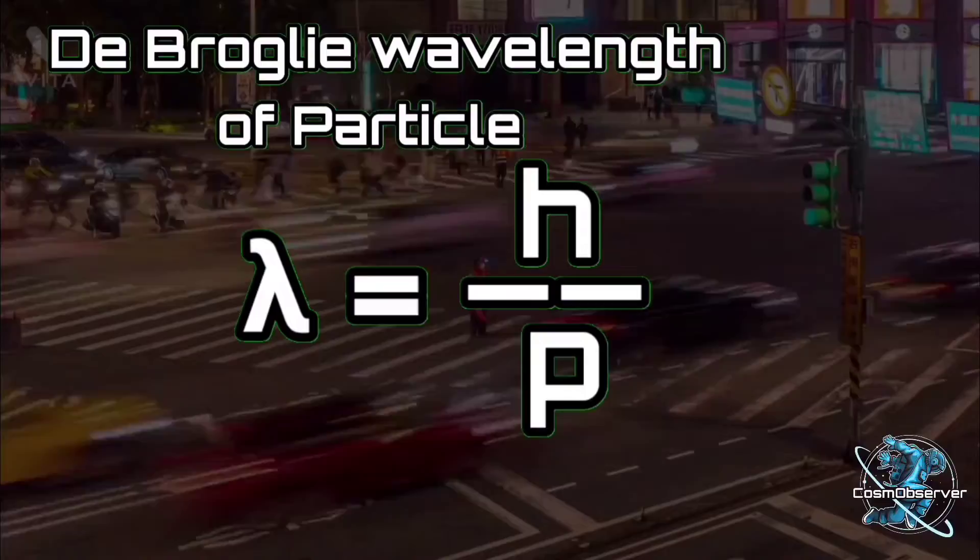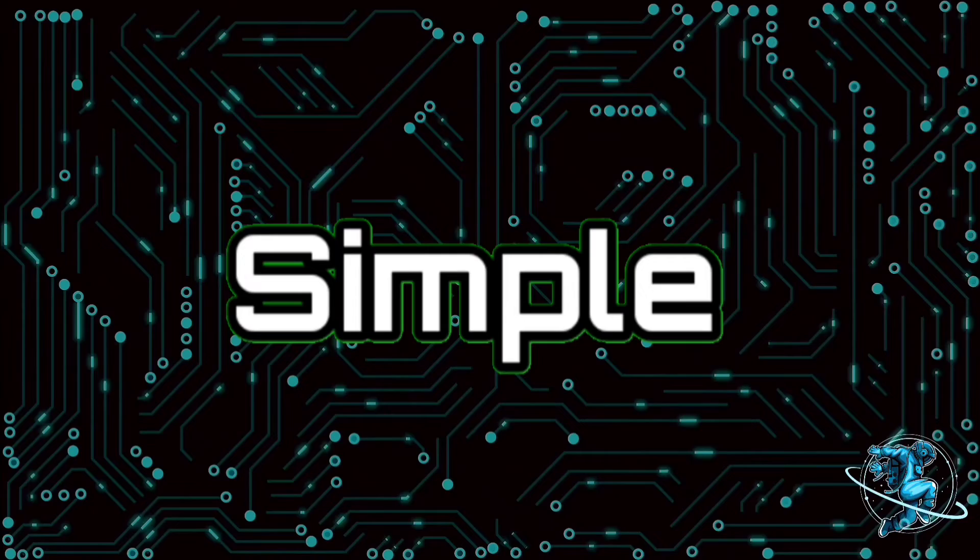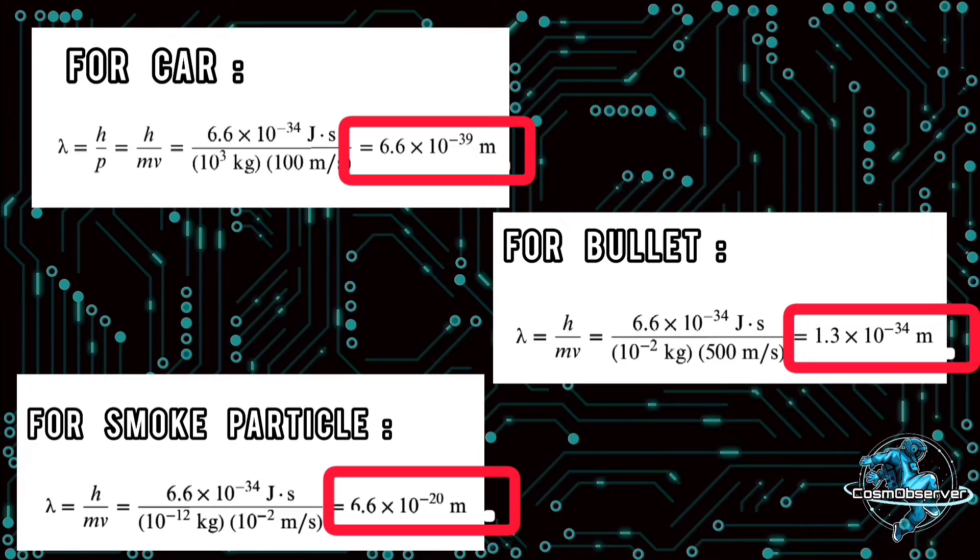Apparently that means we all have a wave nature. But wait, why can't we see the wavy nature of us? Interestingly, the answer is very simple. If you calculate the de Broglie wavelength of any massive object, the wavelength is really very small, which is why we can't even detect it in laboratories.